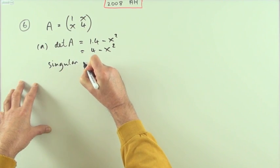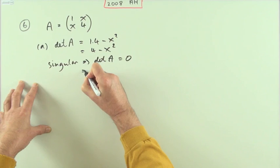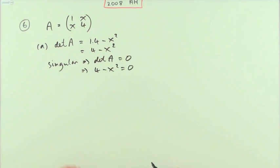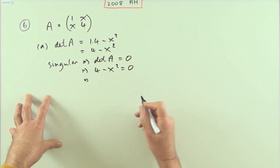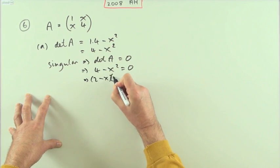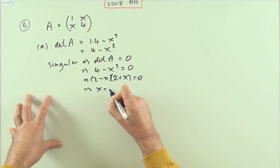It will be singular if the determinant of A is equal to zero. That means four minus x squared equals zero. You can see the answer straight away, plus or minus two. Write it out whichever way you like. You could factorize it to two minus x times two plus x equals zero, and then say x equals two or negative two.